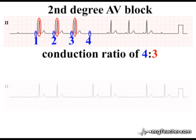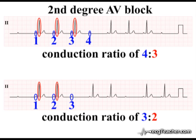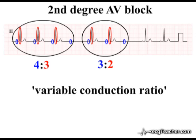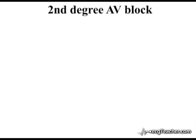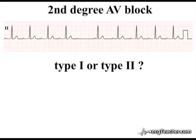The conduction ratio in second degree AV block, and therefore the size of the groups, varies between patients and may even vary between groups in a single patient. In the presence of very high conduction ratios, differentiating between Mobitz type 1 and type 2 can be a much more challenging task than illustrated so far.